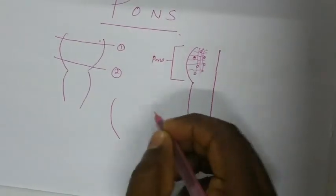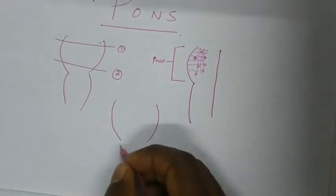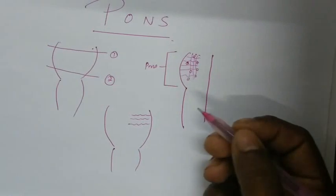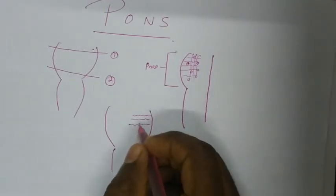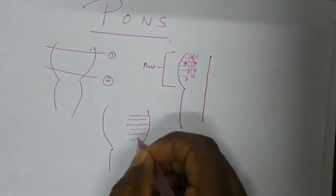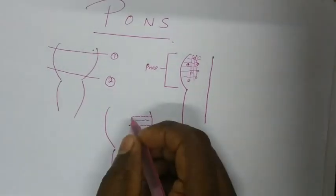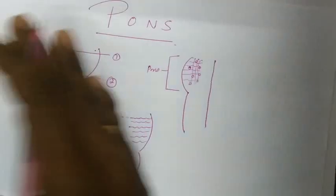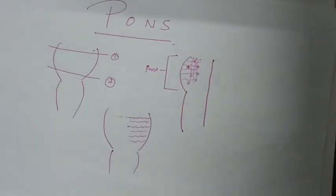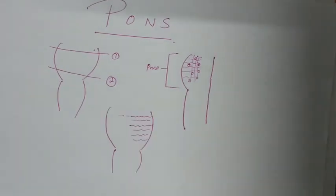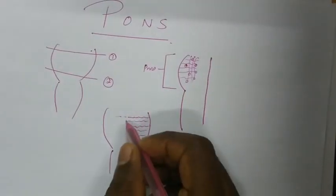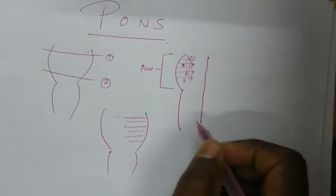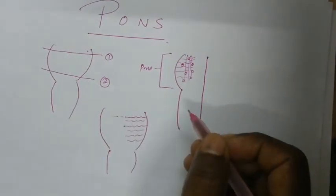The transversely running fibers will end up in the middle cerebellar peduncles. These fibers can cross from one side to the other. Most of the fibers will be crossing from one side to the other and few fibers will go in the ipsilateral direction. Hence these transversely running horizontal fibers will project into the opposite side cerebellum or may be to the same side of the cerebellum.